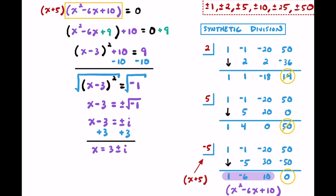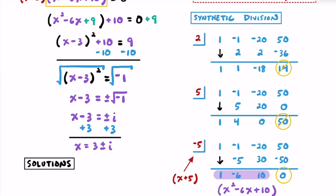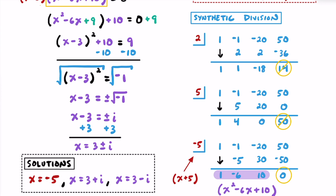Putting it all together, our three solutions are: x equals negative 5, which is our real rational zero from synthetic division; and x equals 3 plus i and x equals 3 minus i, which are the two complex or imaginary solutions from completing the square. Hopefully when you look at these three solutions, you can visualize what this cubic polynomial's graph is going to look like — feel free to pause and sketch it.